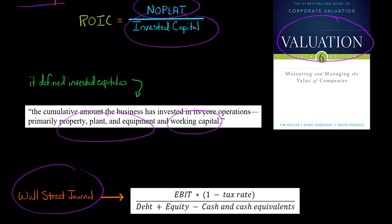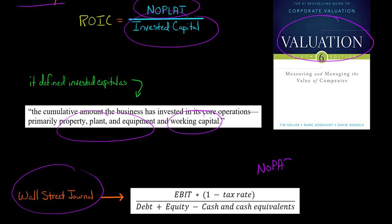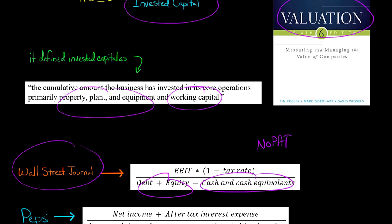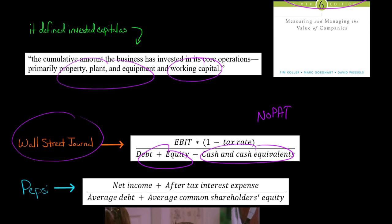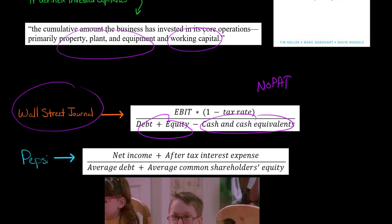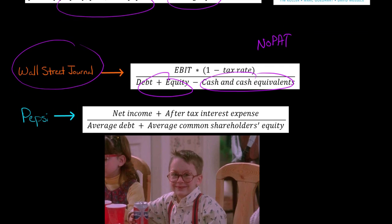The Wall Street Journal ran an article on return on invested capital and provided a different formula. In their formula, the numerator uses earnings before interest and taxes times one minus the tax rate — which is equivalent to NOPAT. In the denominator for invested capital, they use the sum of debt and equity minus the company's cash and cash equivalents.